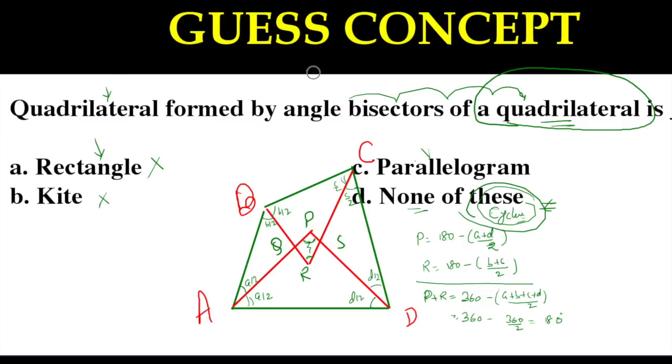So please note it down in your notebook, the angle bisectors quadrilateral by the quadrilateral or of the quadrilateral gives a cyclic quadrilateral. So I hope it is clear to you. So I have given a complete solution. You just need to note it down in your paper. Angle bisector of quadrilateral is a cyclic quadrilateral. Angle bisector of a parallelogram would give a rectangle. Fine.